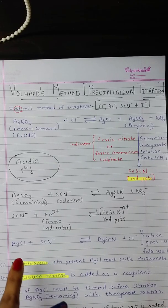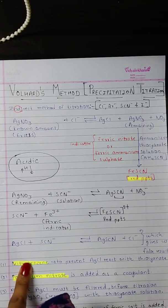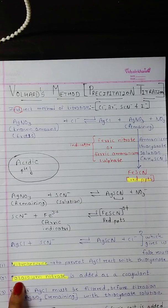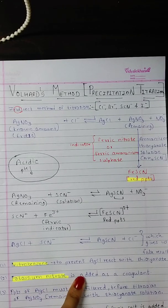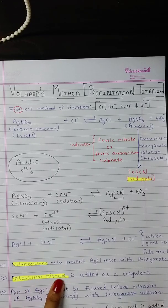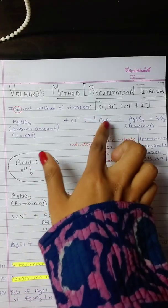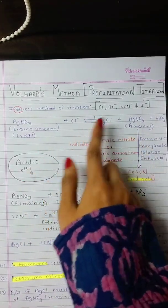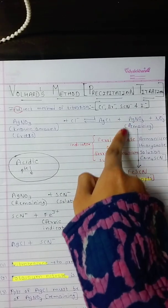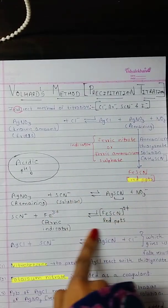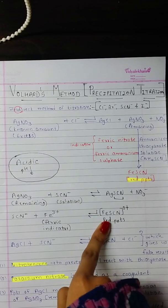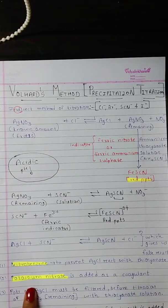Secondly, potassium nitrate can be used as a coagulant. Lastly, you can remove the AgCl by filtration, and then react the remaining AgNO₃ with the ammonium thiocyanate solution to give the red precipitates. These are the three approaches that can be used to prevent false results.